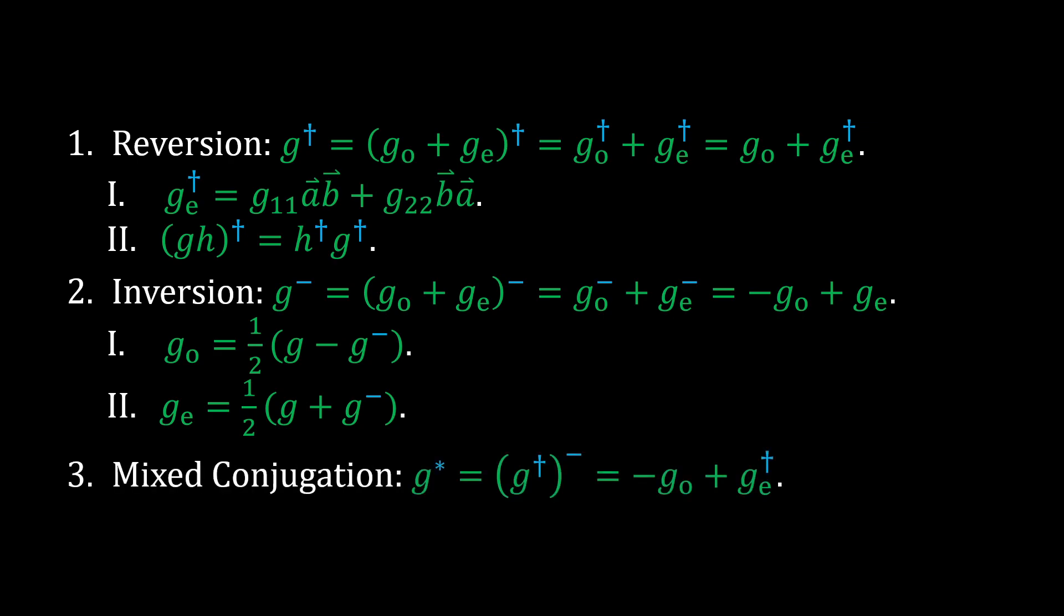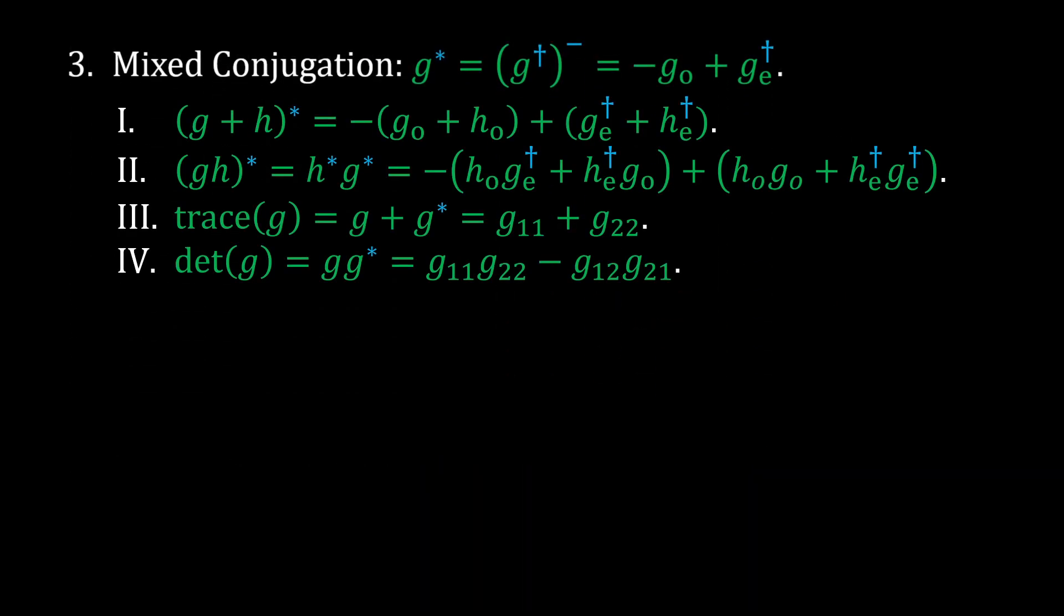The third and final conjugation is mixed conjugation, where both reversion and inversion are applied. This is denoted by the asterisk, and has the following properties. The most important results are the simple definitions given for the trace and determinant of G.